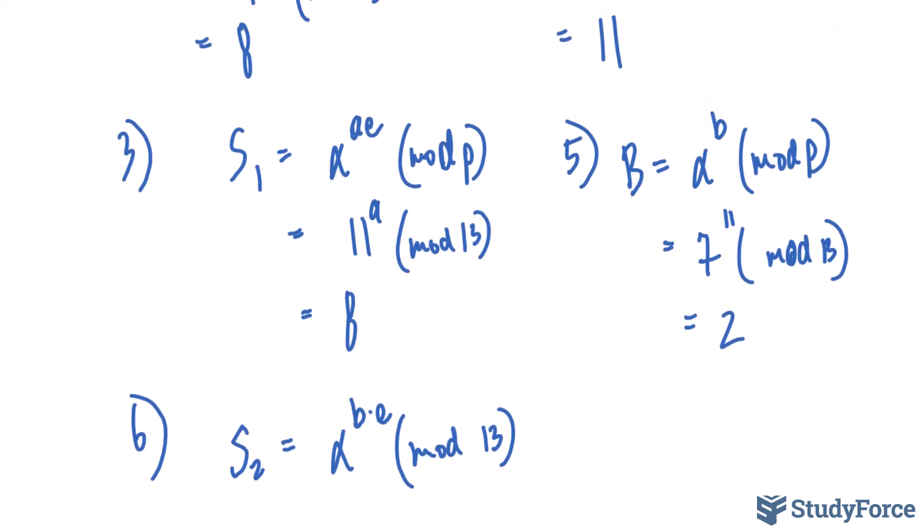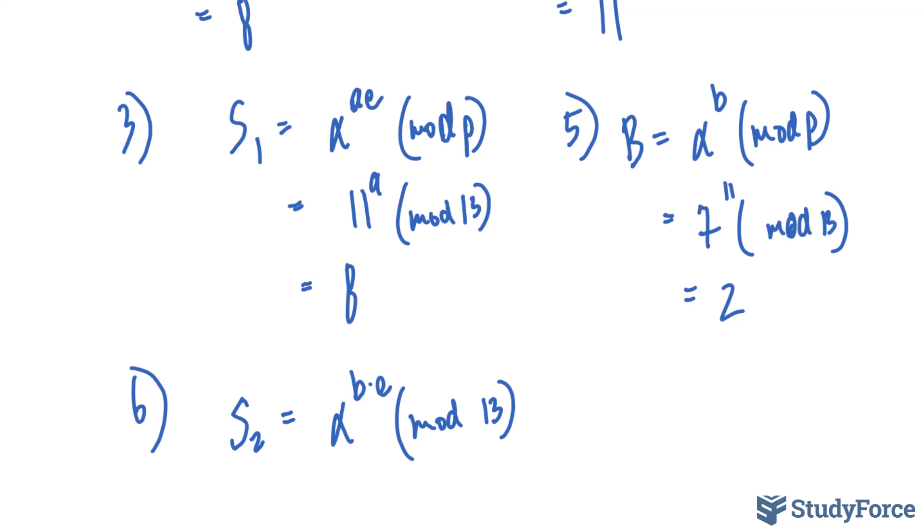Now notice the difference between this formula and the previous. In the previous, we were using A and E as exponents. And in this formula, we're using E and B as our exponents. And it doesn't matter the order here. We have B, E, or E, B.